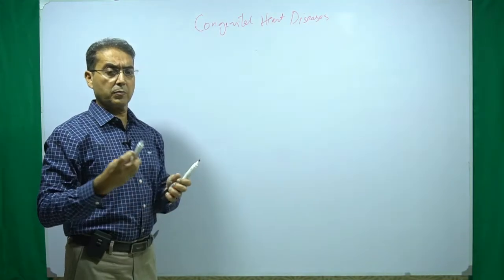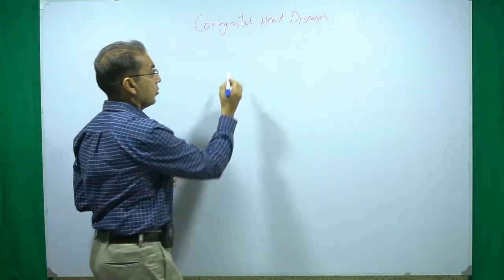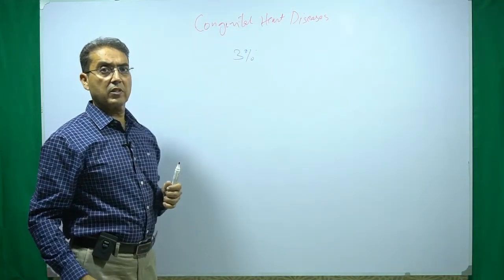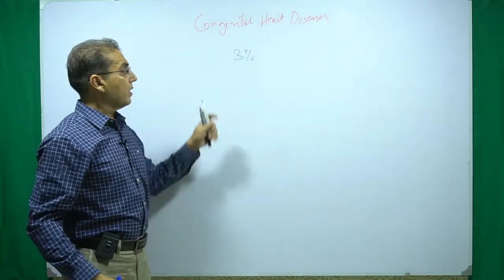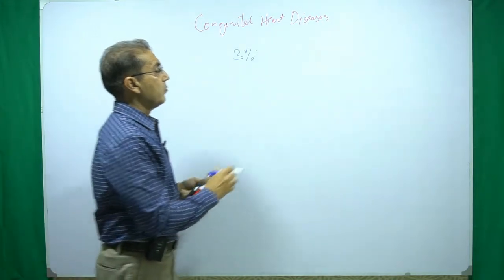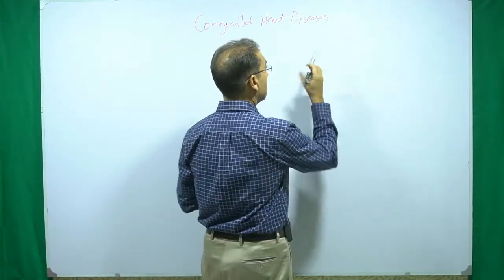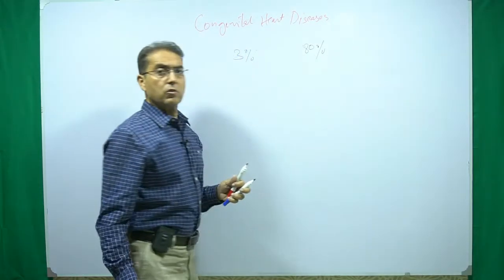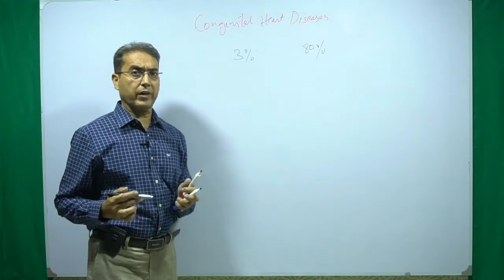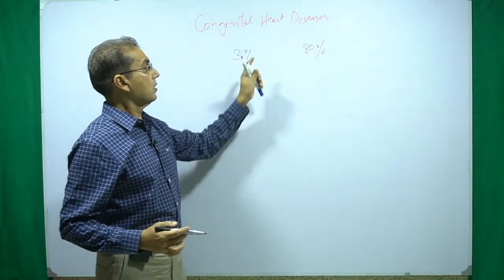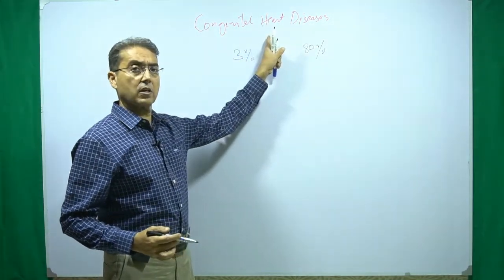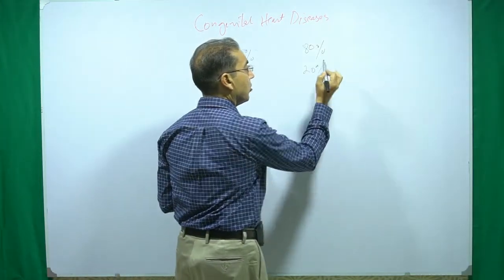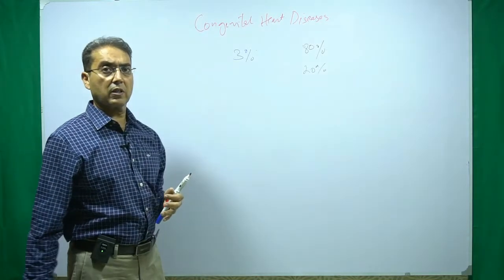Congenital heart diseases are the commonest birth defects. Almost 3% of babies born have one of the congenital heart diseases. Unfortunately, for more than 80% of cases, we do not know what the cause is — what factors drive the development of these congenital heart diseases. Only in 20% of cases do we know the possible causes.